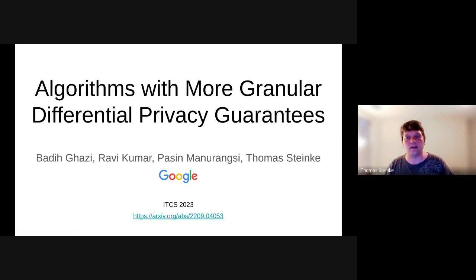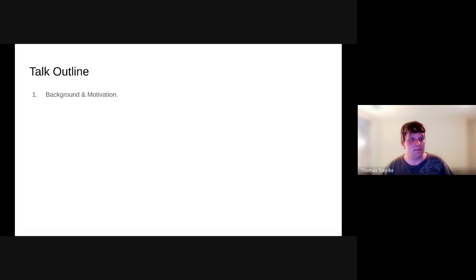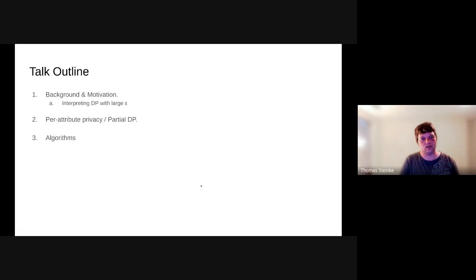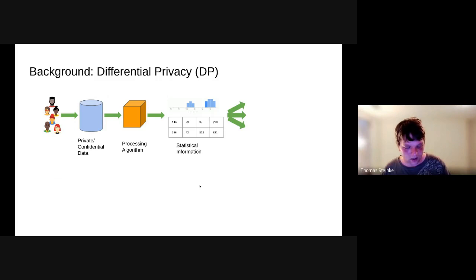Hi, I'm Thomas, and I'm going to be telling you about algorithms with more granular differential privacy guarantees. I'll start by giving some background and motivation, and the high-level question is how do we interpret large privacy parameters? That's going to lead us to defining per-attribute privacy or partial differential privacy, and then I'm going to tell you about some algorithms that provide per-attribute privacy guarantees, looking at the tasks of K-way marginals, histograms, and learning half-spaces, and then we'll wrap up.